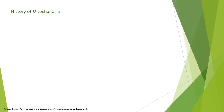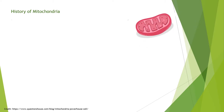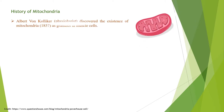Now I will discuss the history of mitochondria. Albert von Kölliker, a physiologist, discovered the existence of mitochondria around 1857 while he was studying human muscle cells and he noted strange granules in them.